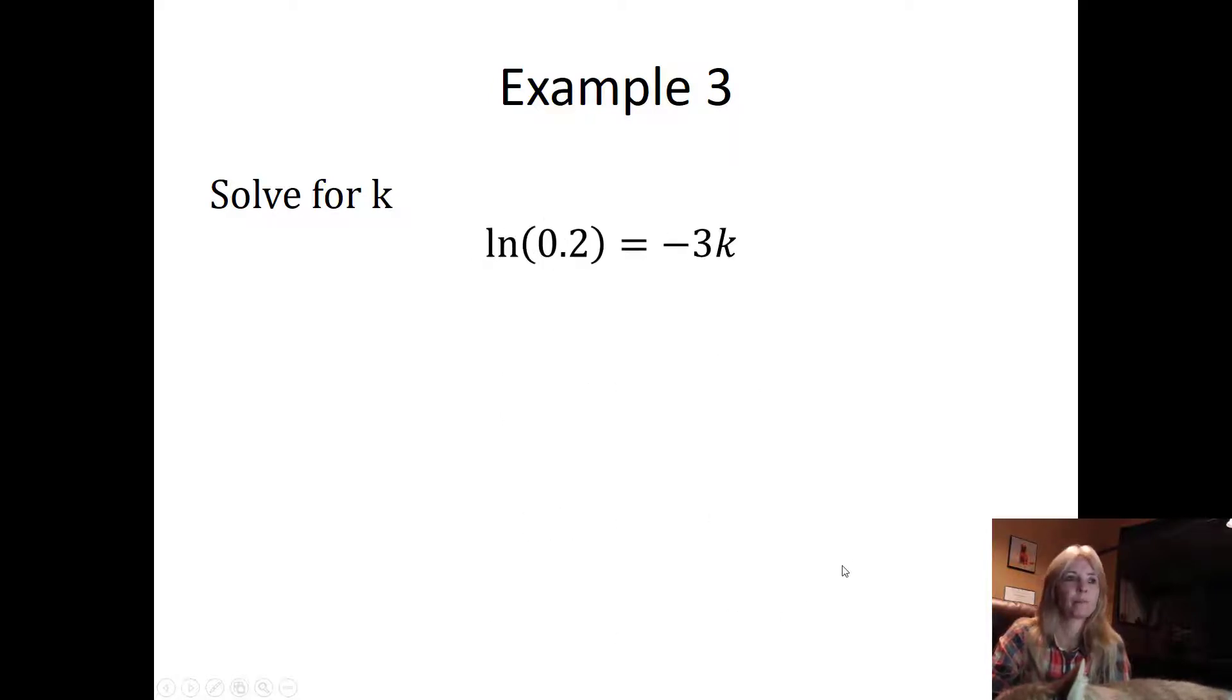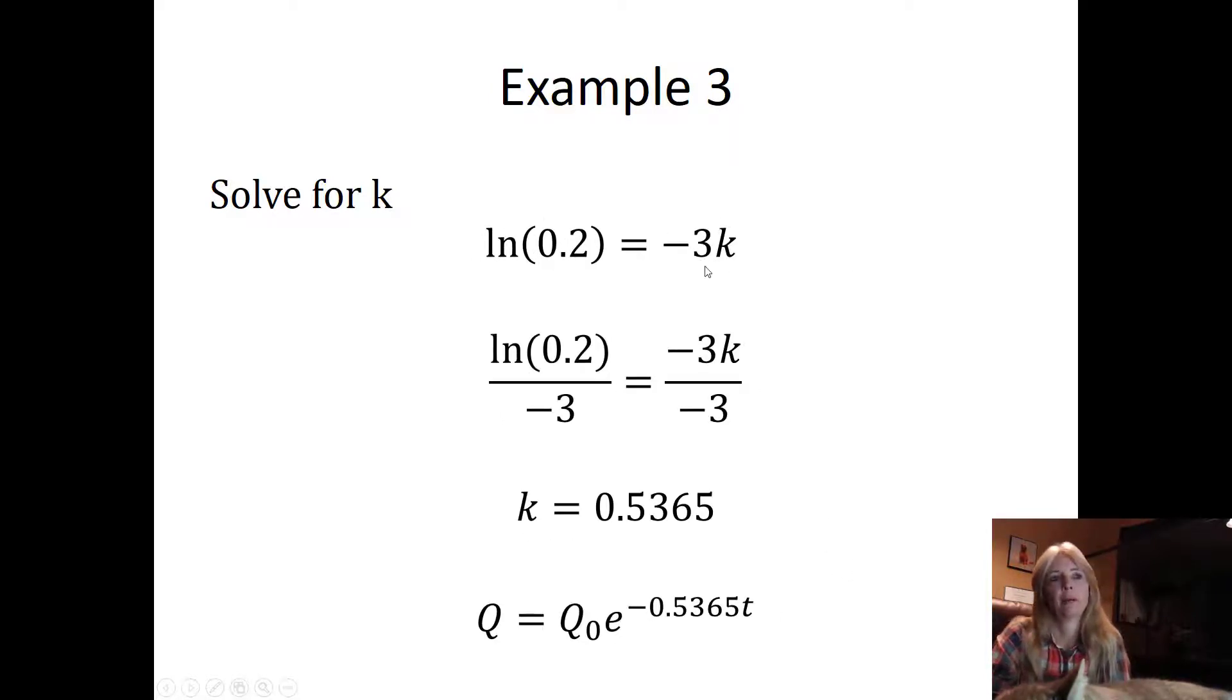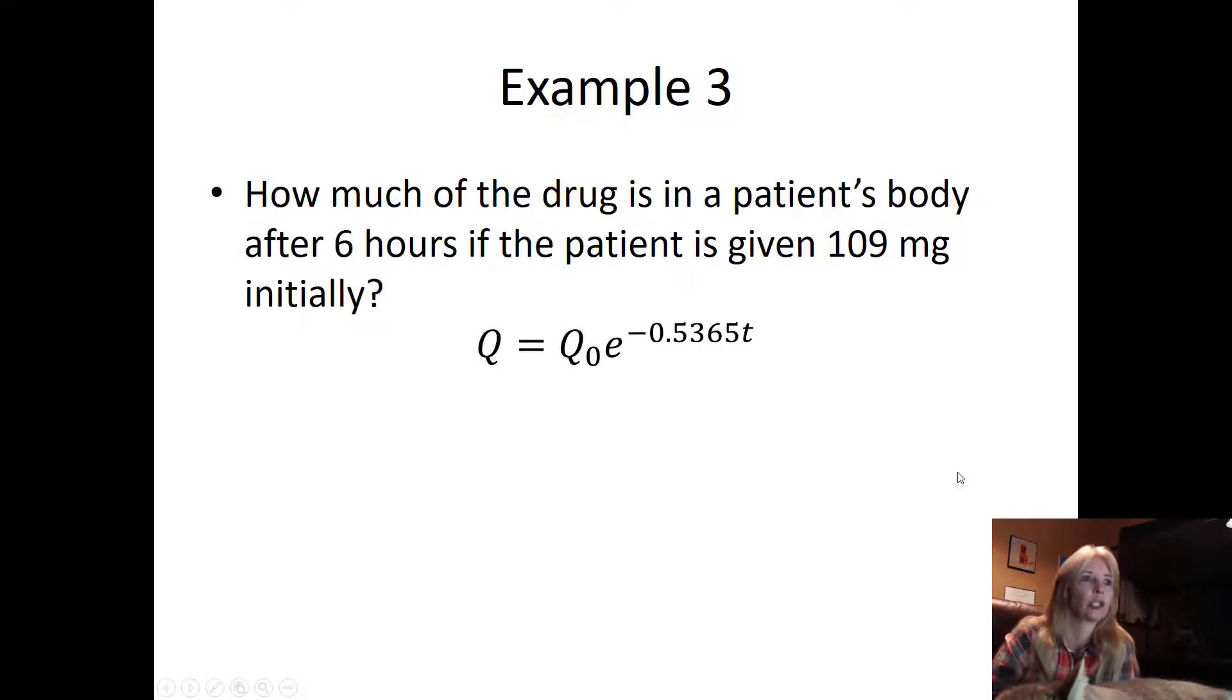I ln both sides, which brought down my negative 3k. I divide by negative 3, and now I get my constant of proportionality. Now I actually have my k that I can use to further answer the question: how much of the drug is in the patient's body after six hours if the patient is given 109 milligrams initially? Remember, Q_0 is your initial amount, and so I can see about four milligrams.